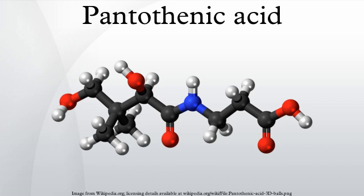Absorption: When found in foods, most pantothenic acid is in the form of CoA or acyl carrier protein. For the intestinal cells to absorb this vitamin, it must be converted into free pantothenic acid. Within the lumen of the intestine, CoA and ACP are hydrolyzed into 4-phosphopantetheine. The 4-phosphopantetheine is then dephosphorylated into pantetheine. Pantetheinase, an intestinal enzyme, then hydrolyzes pantetheine into free pantothenic acid. Free pantothenic acid is absorbed into intestinal cells via a saturable, sodium-dependent active transport system.